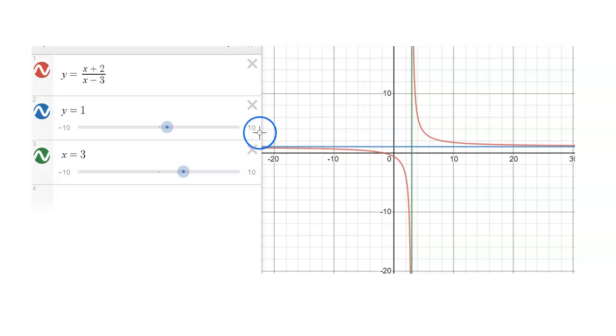All right, so this is the graph of y equals x plus 2 divided by x minus 3. So this red color is that graph there. And I also included the lines y equals 1 in blue and x equals 3 in green. I graphed this in Desmos, by the way, www.desmos.com. Very convenient.